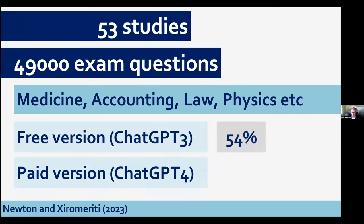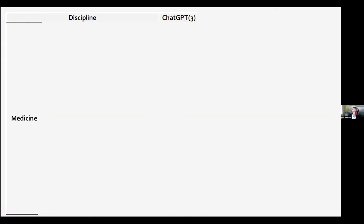To summarize quickly: we found 53 studies — we stopped looking in July last year and there have been many more since. These studies covered 49,000 different assessment items from a variety of disciplines, though most were in medicine. The free version of ChatGPT got 54% of exam questions correct. The subscription version got 75% correct. The size of the difference between these two is unlike anything I've seen in other educational interventions. Essentially, a student with no prior knowledge, accessing GPT-4 during an exam, could score 75%.